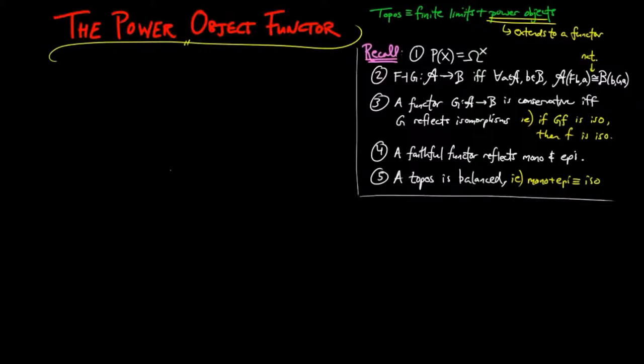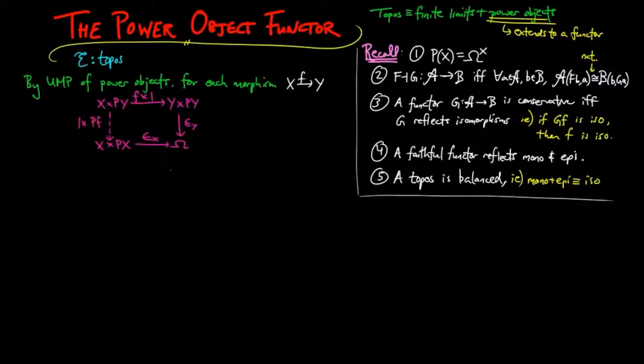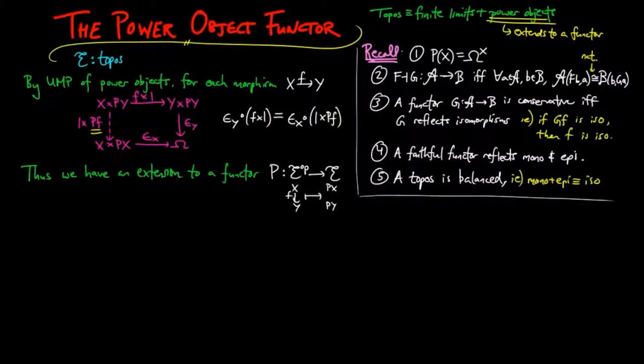Throughout this video, we assume we are working in a fixed topos E. By the universal mapping property of power objects, for each morphism f from x to y, there is a unique morphism P(f) from P(y) to P(x), such that the following diagram commutes. Then it is easy to verify that this assignment defines a functor P from the opposite category of E to E.